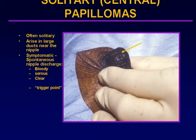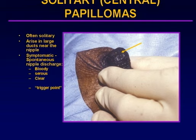Starting with solitary central papillomas — as their name implies, they are often solitary. They arise in the large lactiferous ducts near the nipple. The patient typically presents symptomatic, with spontaneous nipple discharge that is either bloody, serous, serosanguinous, or clear. Often the patient has a trigger point where the area is palpated and the discharge can be elicited. That is very helpful for the surgeon, because clinically they can determine at what location the offending duct is.